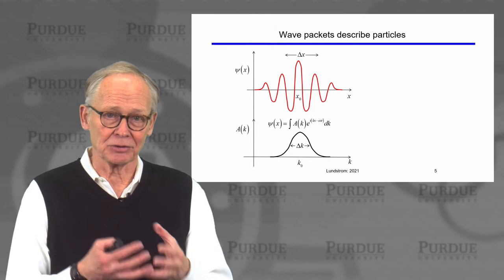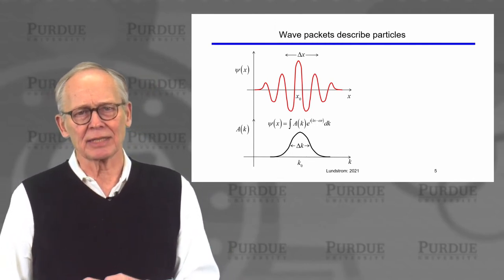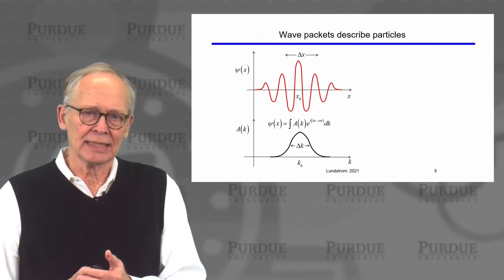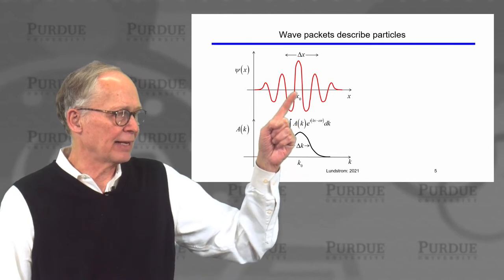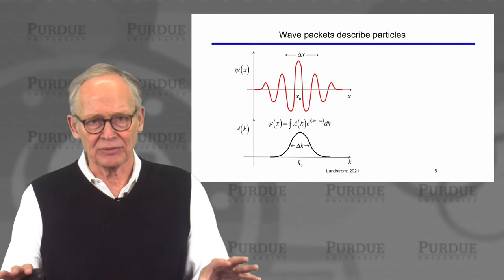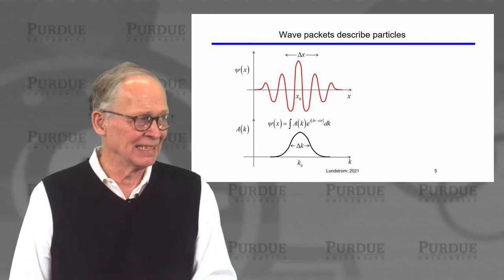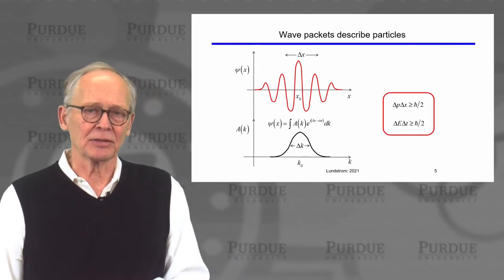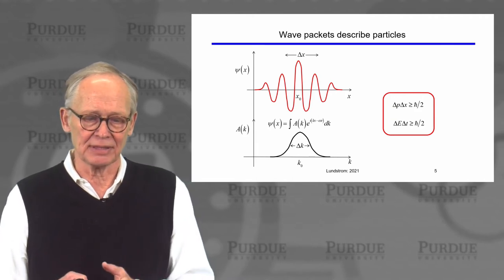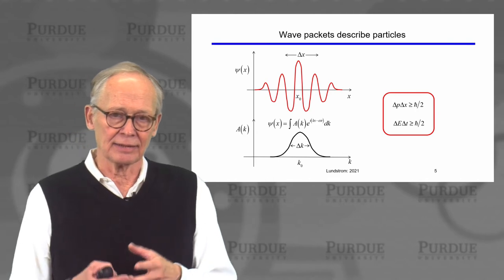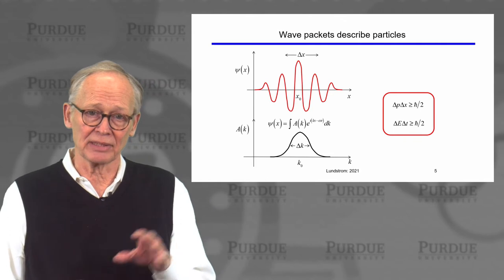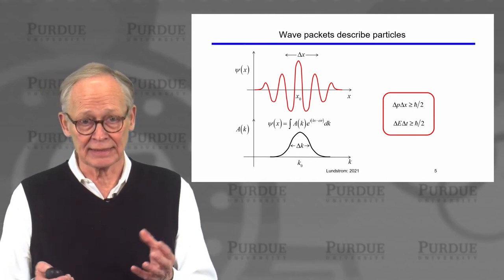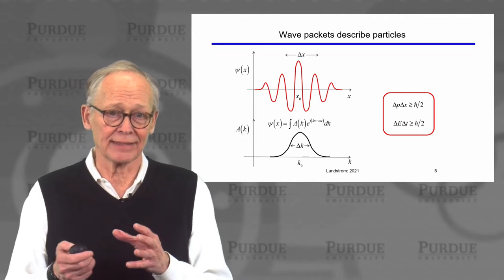An electron exists in a certain location, but a wave exists everywhere. We describe an electron by making a wave packet — we take a small spread of different wave vectors and create a wave packet such that the probabilities add up in phase at the location of the particle and out of phase away from the particle, so we localize the particle at a position x₀. There is some uncertainty in exactly where this electron is located, and that leads to the Heisenberg uncertainty relations: the uncertainty in momentum and location are related by Δp·Δx ≥ ℏ/2, and there is a similar uncertainty relation for energy and time. These are a fundamental difference between quantum mechanical particles and classical particles.